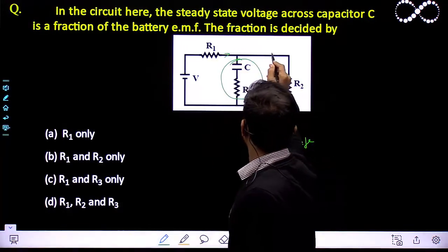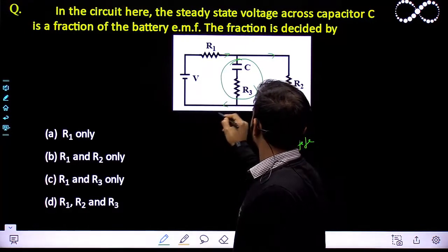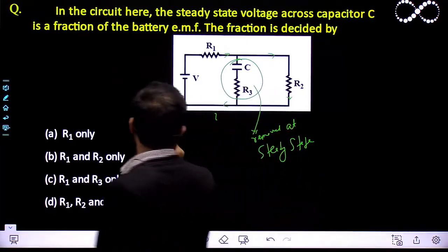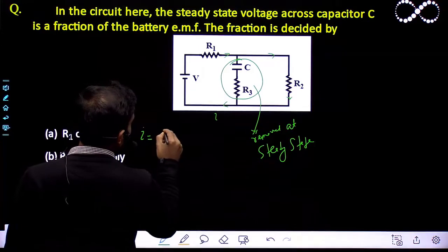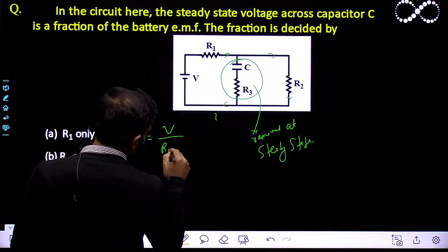The current will flow only here. Let us assume this value is I. I can say the value of I will be equal to V/(R1+R2).